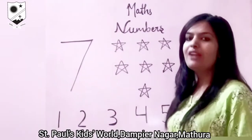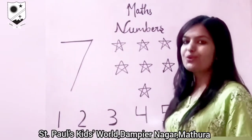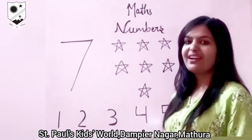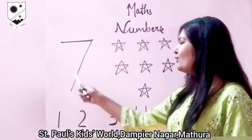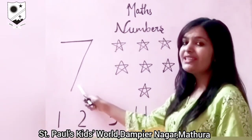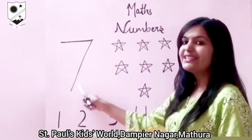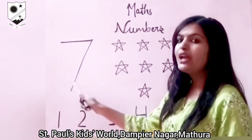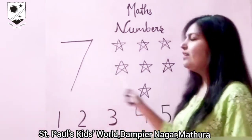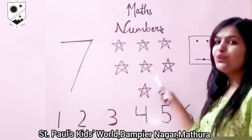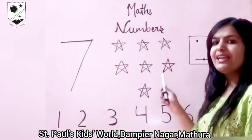In this video we will learn how to write number 7. Let's start. Look here everyone. Which number is this? This is number 7. With number 7 I have drawn few stars.